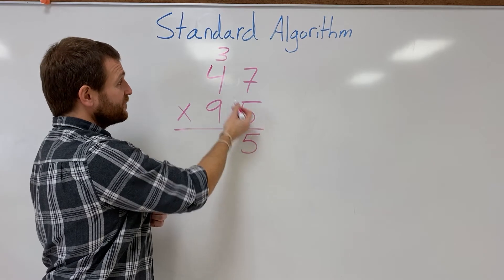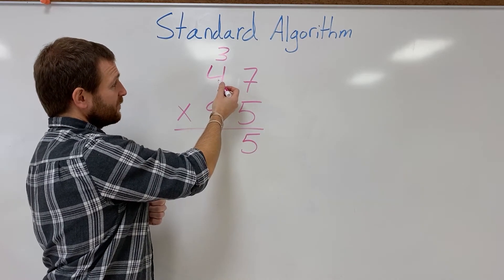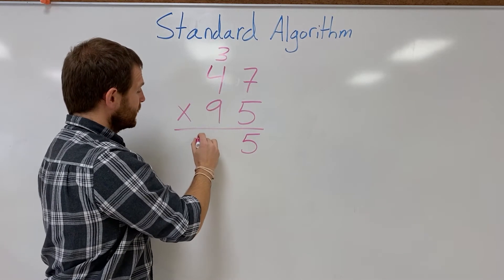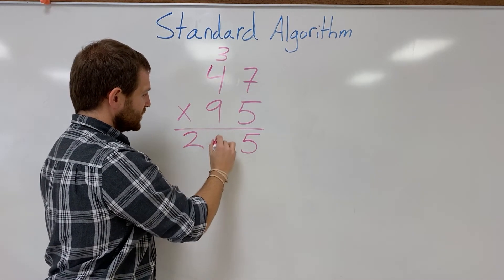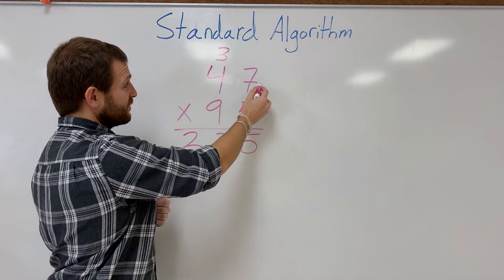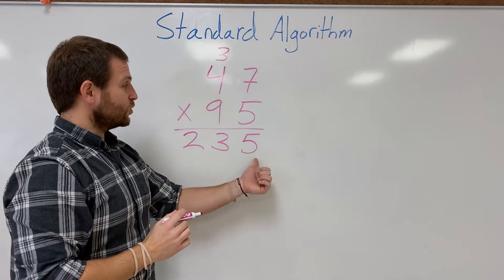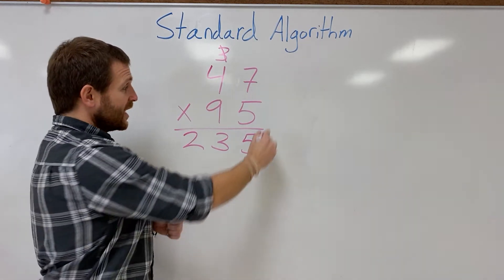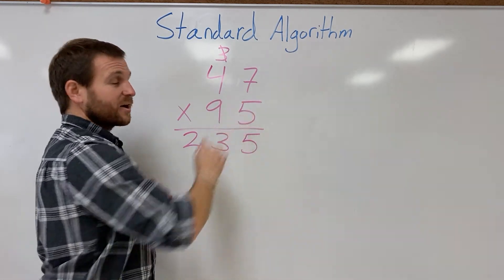Next up I'm gonna do 5 times 4. 5 times 4 is 20, plus 3 that I carried from before, it's gonna give me 23. So 5 times 47 is 235. I cross out my 3 because I'm done using that. I'm also done with my 5. I've multiplied it all the way through.